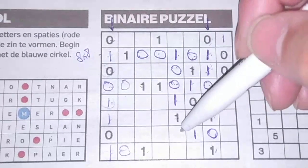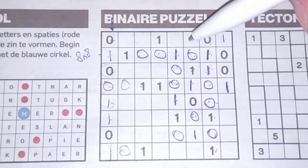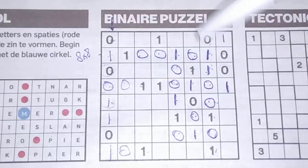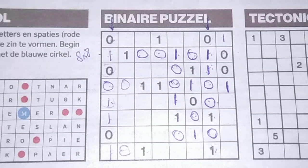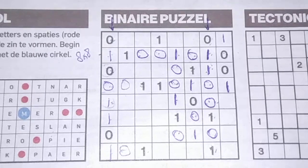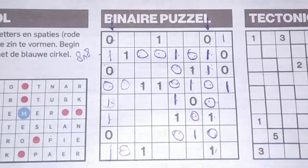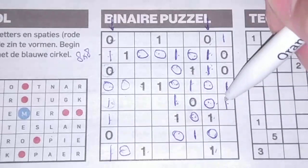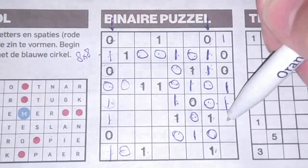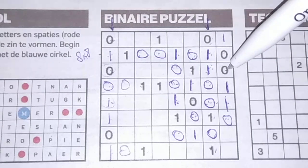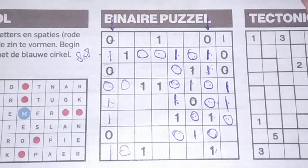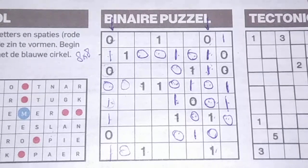Double one here, an O, then O — and then I'm stuck again. Double one here, an O, then O. Double O here, an O, then O.